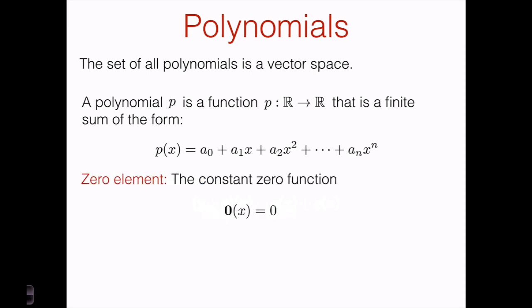The zero element in the vector space of polynomials is just the constant zero function — the zero polynomial. I'm not going to go through all the other checks to verify that the set of all polynomials satisfies all the conditions to be a vector space, but it does, and you can verify that for yourself if you want to.